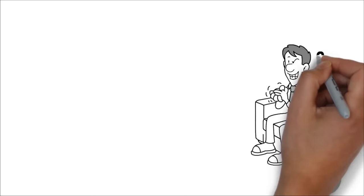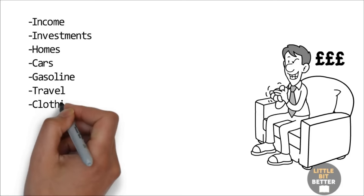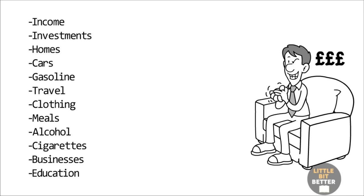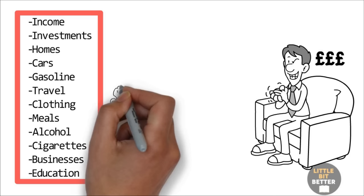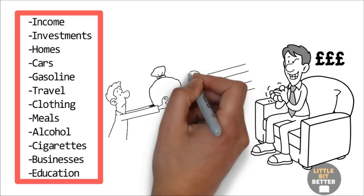As you know, we already pay taxes on our income, investments, homes, cars, gasoline, travel, clothing, meals, alcohol, cigarettes, businesses, education, etc. We pay taxes upon taxes. We pay taxes on things we don't even know about. These taxes are sold to us as being good for society. And some are. Society's problems, however, only get bigger because bureaucrats do not know how to solve problems. They know how to throw money at the problems.